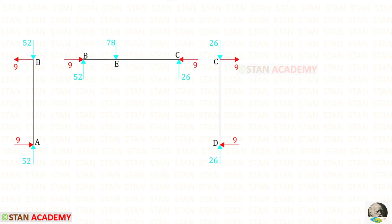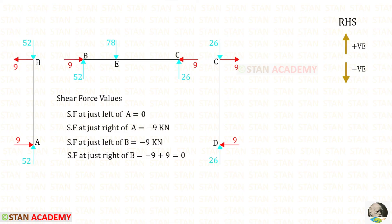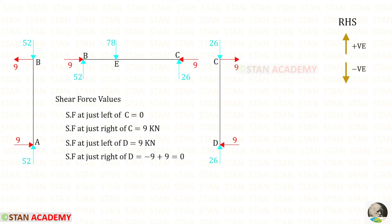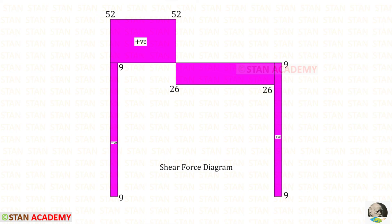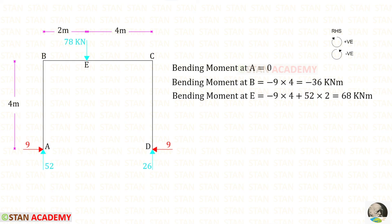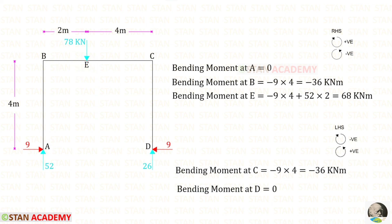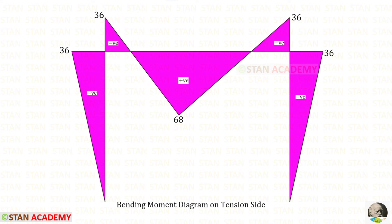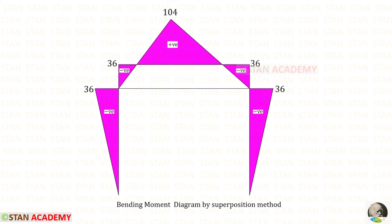Now we can draw the free body diagram and use it to find the shear force values. These are the shear force values in column AB, in beam BC, and in column CD. This is the shear force diagram. Using the right-hand side rule we can find the moments at A, B, and E, and using the left-hand side rule we can find the moments at D and C. This is the bending moment diagram. If we draw the bending moment diagram on the opposite side, that is called the bending moment diagram on the tension side. This is the bending moment diagram by the superposition method.